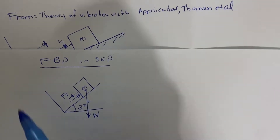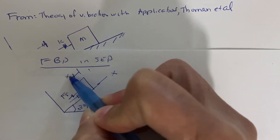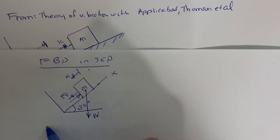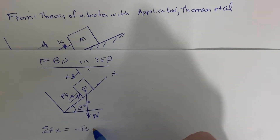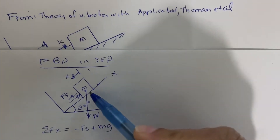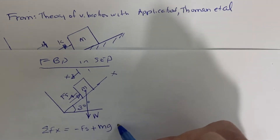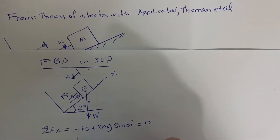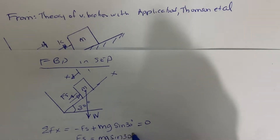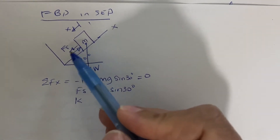For static equilibrium, let's define the x-axis along the incline with positive x pointing up the slope. The sum of forces in x equals zero, giving us: minus the spring force plus the component of weight along the incline equals zero. So the spring force Fs equals mg sin 30°, and since Fs equals k times the static stretch, we get k·δ_st = mg sin 30°.